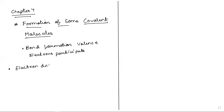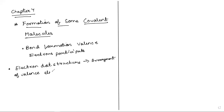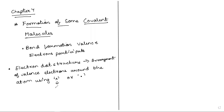When we form covalent molecules, we use electron dot structures. Electron dot structure is the arrangement of valence electrons around the atom using either a cross or a dot. You represent the valence electrons either with a cross or with a dot. This is called the electron dot structure.